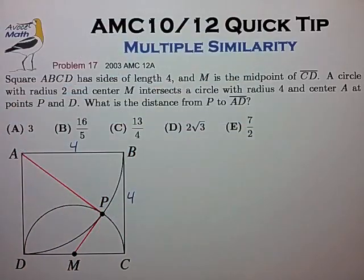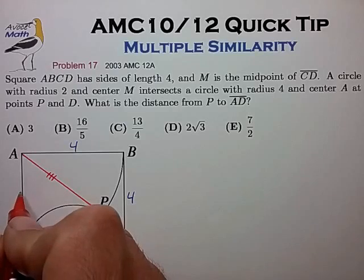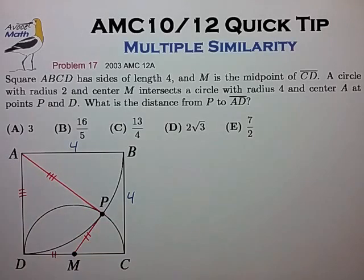And since these are radii, we know that these two line segments are equal, and these two line segments are equal. So we have this interesting symmetric quadrilateral.